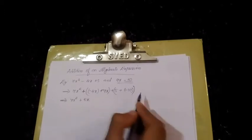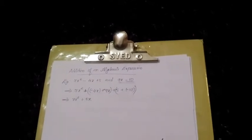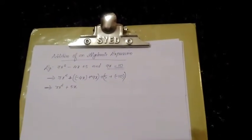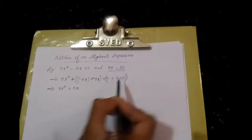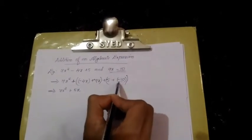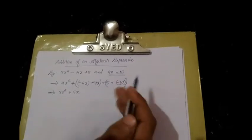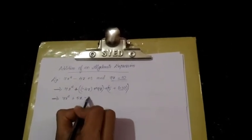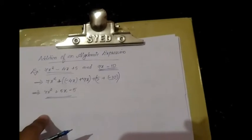This is addition of different sign. Plus and minus. Subtract smaller number from the larger number and put the greater number's sign. 10 minus 5 is 5 with minus sign. So minus 5. Addition of these expressions gives 7x square plus 5x minus 5.